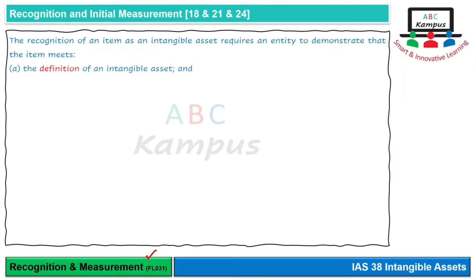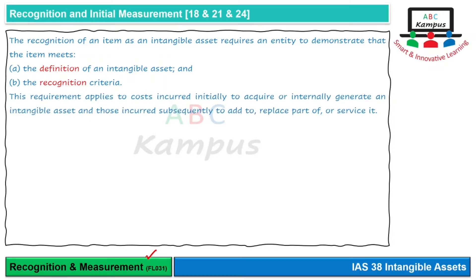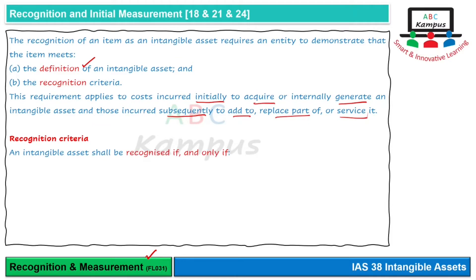The first criterion is the definition of an intangible asset, which we covered in the last video. The second recognition criterion, also covered previously, is that the cost must be reliably measurable — whether that cost is initially incurred when we acquire or internally generate the asset, or is an addition, replacement, servicing, or maintenance cost.